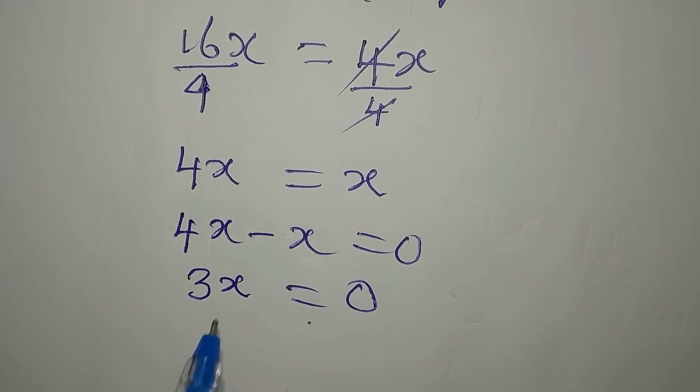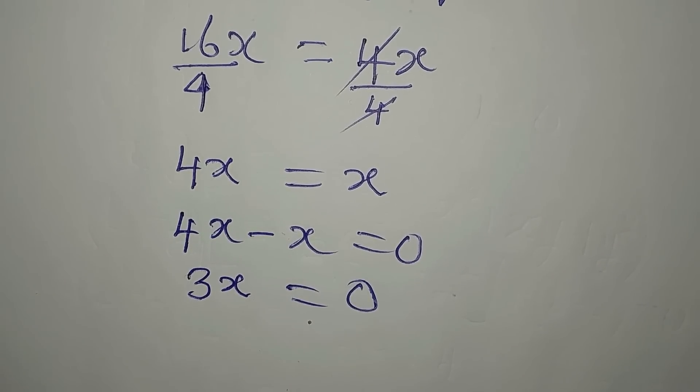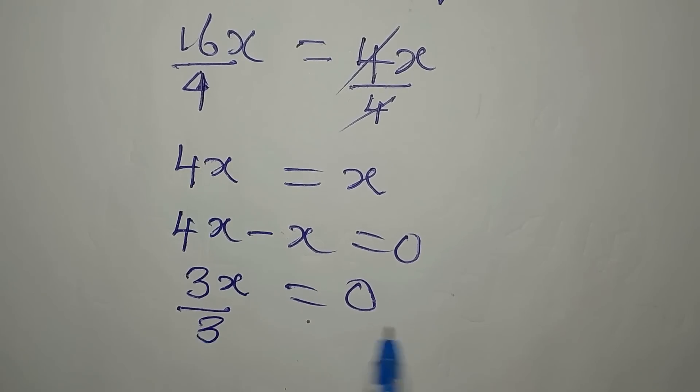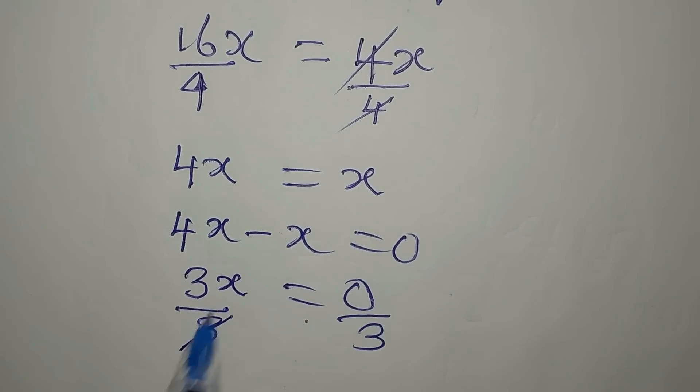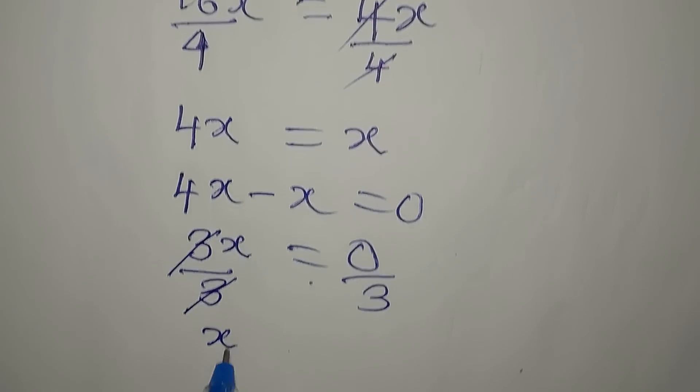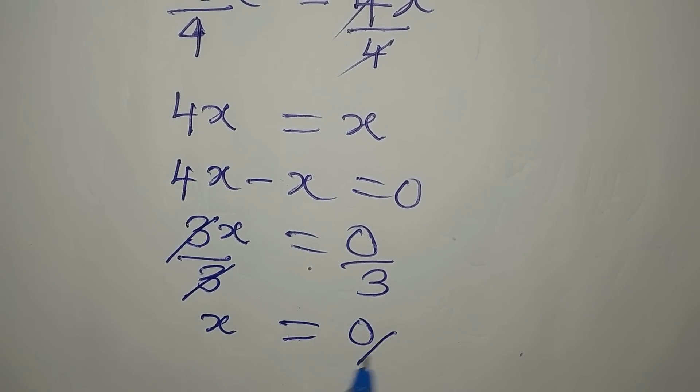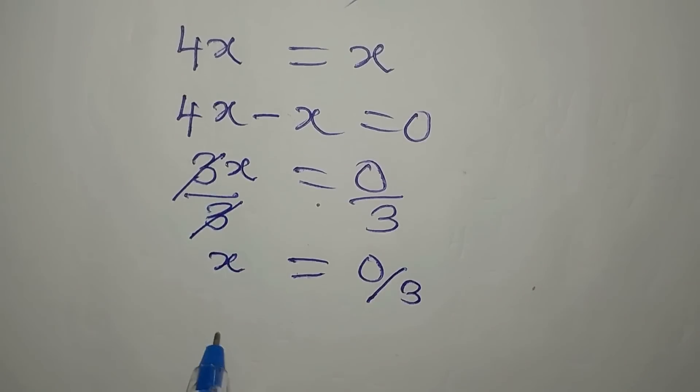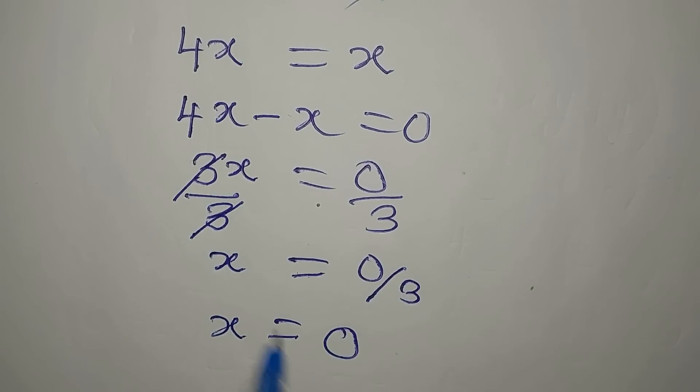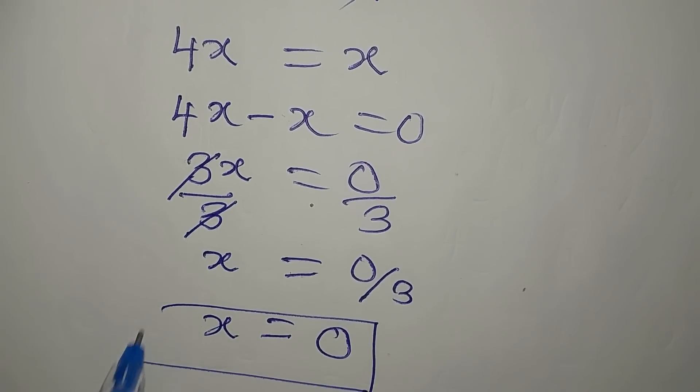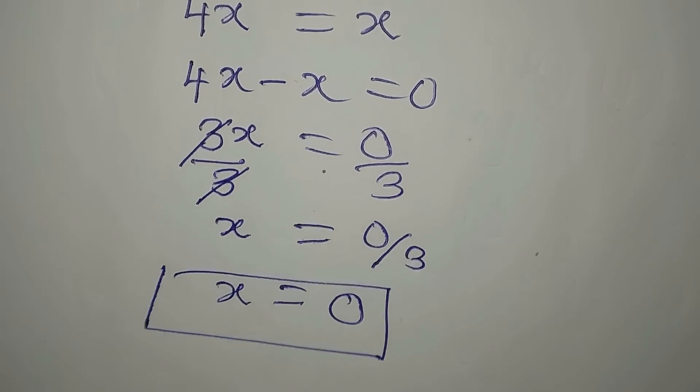So what do we multiply by 3 to get 0? It is 0. But then you can just divide by 3. And our x is equal to 0 divided by 3. And 0 divided by 3 is 0. So the value of x that satisfies the equation is 0.